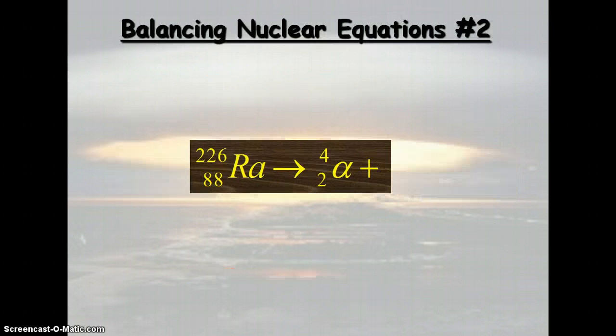So we're going to use that fact to help solve for unknowns. Here we have a radium atom, radium 226 has 88 protons. It's going to emit an alpha particle, and we want to find what element it turns into.